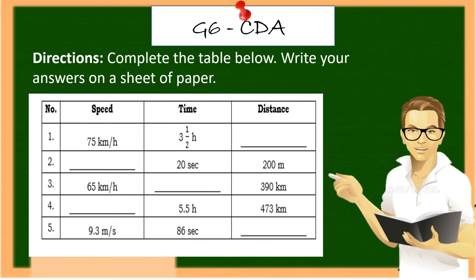Directions: Complete the table below. Write your answers on a sheet of paper. Number 1. The speed is 75 kilometers per hour. The time is 3.5 hours. So what is the distance? I will give you 10 seconds. Correct. 262.5 kilometers.